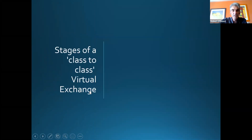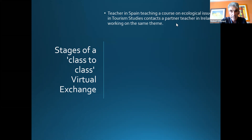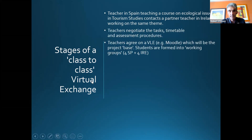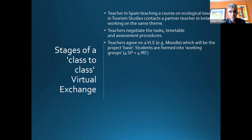Here are the stages of a class-to-class virtual exchange. First, a teacher in Spain teaching a course on ecological issues in tourism studies contacts a partner teacher in Ireland working on the same theme. Then, teachers negotiate the tasks, timetable, and assessment procedures — normally the semester before your exchange. Teachers also agree on a virtual learning environment, for example Moodle, which will be the base where students work together. Students are separated into working groups — maybe four Spanish students and four Irish students — because having 30 from each country all working together would be chaos. Each working group does the same tasks.